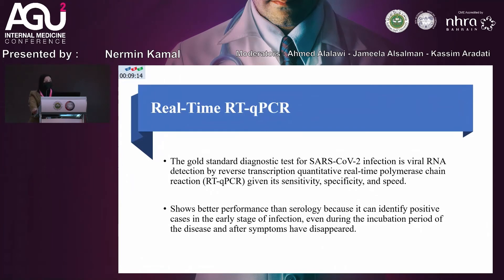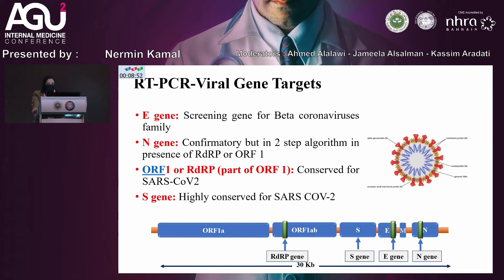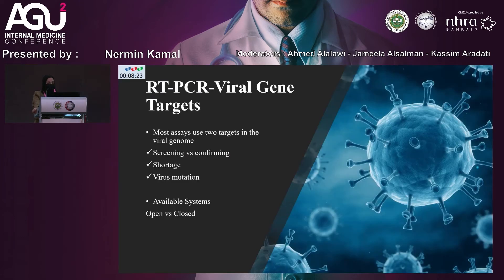The gold standard for diagnosing SARS-CoV-2 is real-time PCR — the reverse transcriptase quantitative real-time PCR — which has the highest sensitivity, specificity, and speed. Different target genes used include the E-gene, used mainly as a screening gene, as well as the N-gene, open reading frame 1, RdRp, and S-gene, which are also used as target genes when diagnosing SARS-CoV-2.